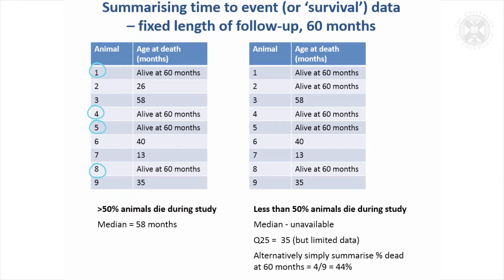In this case we can get a median value because more than half the animals have died. The middle value was 58, with four values below it and four values above it. So we can summarise that data by its median value.